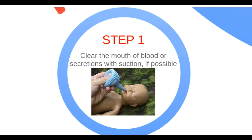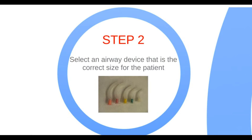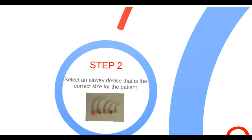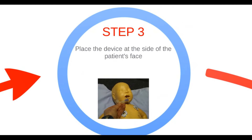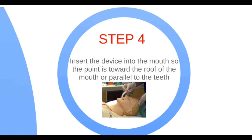Step 1 is to clear the mouth of any blood or secretions with suction. Step 2 is to select a size-appropriate airway device. Step 3: place the device at the side of the patient's face. You'll want to choose a device that extends from the corner of the mouth to the earlobe. Next, insert the device into the mouth so that the point is toward the roof of the mouth and parallel to the teeth.